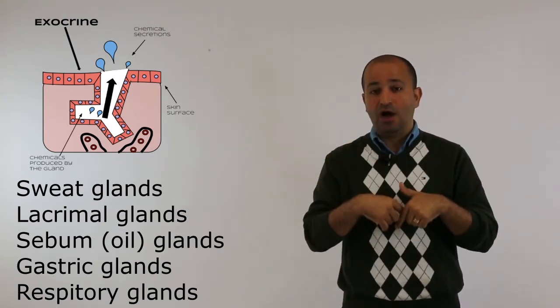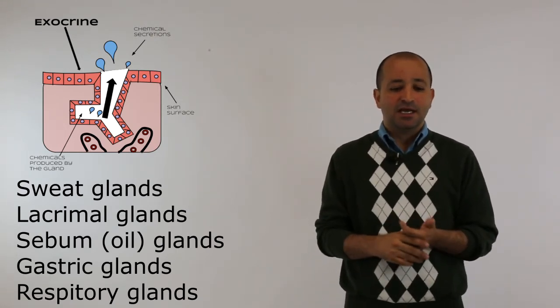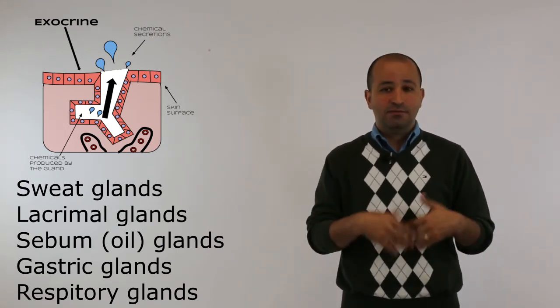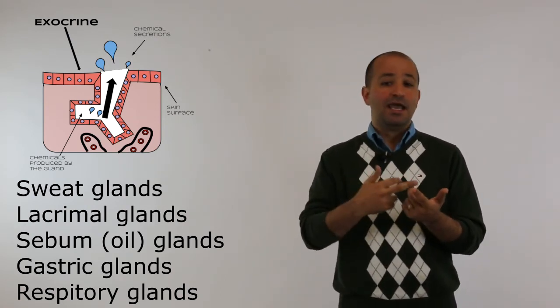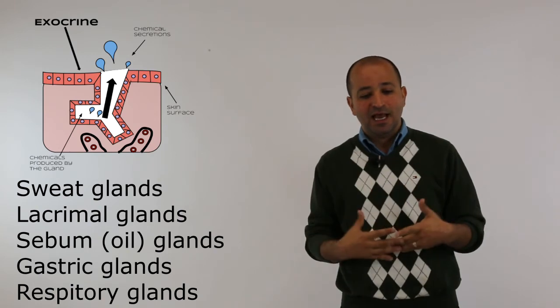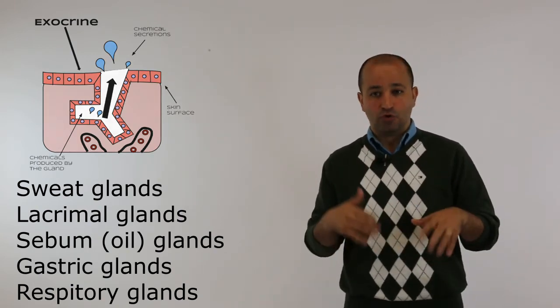Other examples include glands in the digestive system, such as gastric glands in the stomach that produce acid, mucus, and enzymes. Glands in the respiratory system in your airways also produce mucus. These are all considered exocrine glands.